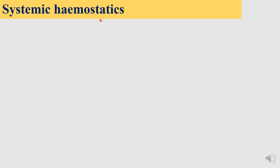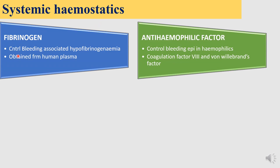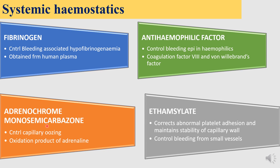Now moving on to the systemic hemostatics. Fibrinogen controls bleeding and is mostly used in hypofibrinogenemia; it is obtained from human plasma. Next, anti-hemophilic factor controls bleeding episodes in hemophilics and contains coagulation factor VIII and von Willebrand's factor. Then adrenochrome monosemicarbazone mainly controls bleeding from capillaries — it is the oxidation product of adrenaline.